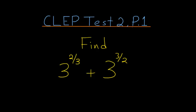For the first problem of the second CLEP test, we need to find 3 to the 2 thirds power plus 3 to the 3 halves power.